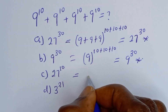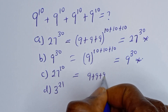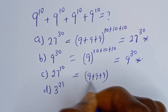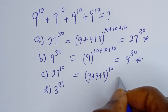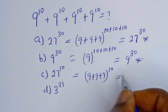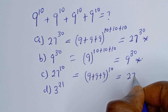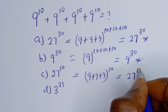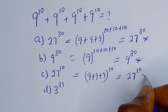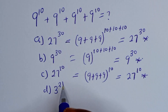Now let's look at option C: the base is 27, which is 9 plus 9 plus 9, and the power is 10. This gives 27 to the power of 10, which is also wrong. Therefore, option D should be the correct answer.